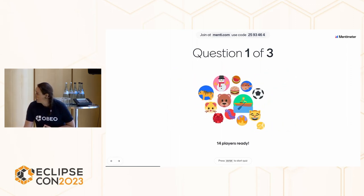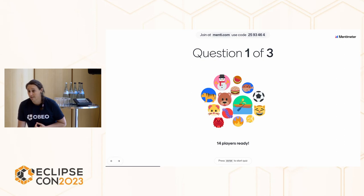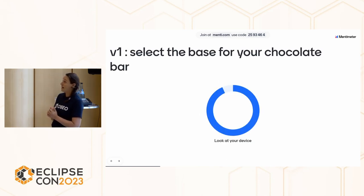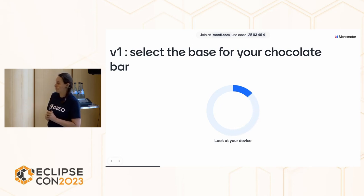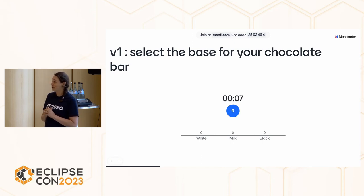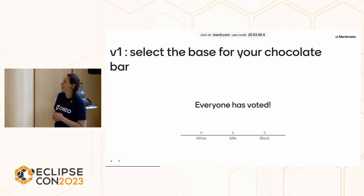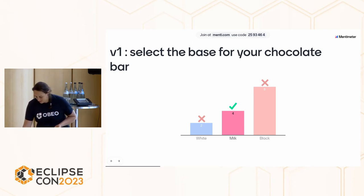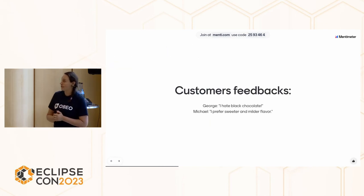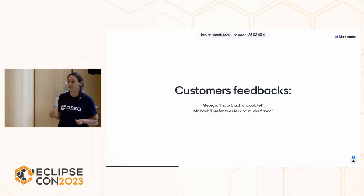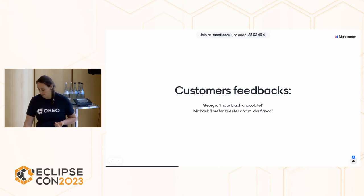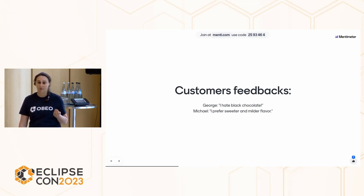The first question for your first release: select the base for your chocolate bar — it's the minimum for a chocolate bar. What do you choose: white, milk, or black? The results: two white, four milk, eight black. Milk is the good answer because we have customer feedback: George said 'I ate black chocolate' — so he'll just eat it if we produce a black bar. And Michael said 'I prefer a sweeter and milder flavor.' That's why the good answer for our first release was milk chocolate.